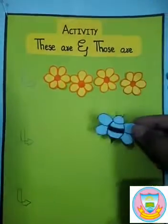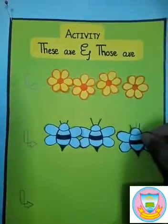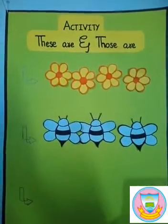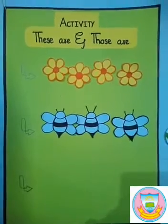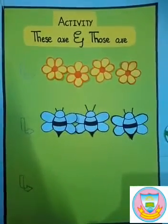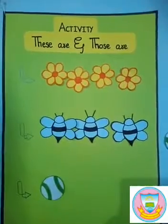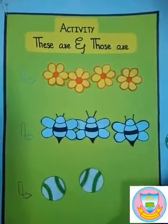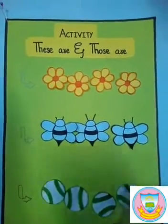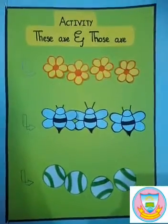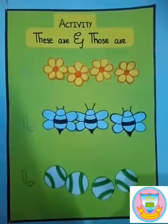Now here we have bees — one, two, three. We have three bees, which shows more than one bee, so we say 'these are bees.' Similarly, we have bowls — one, two, three, four. We have four bowls, so we say 'these are bowls.'